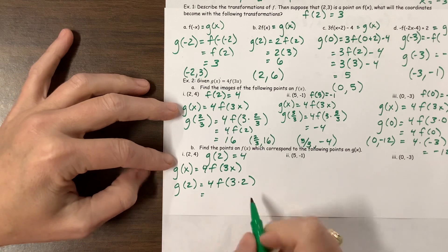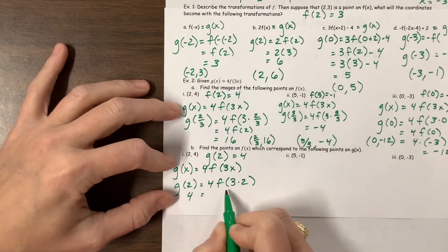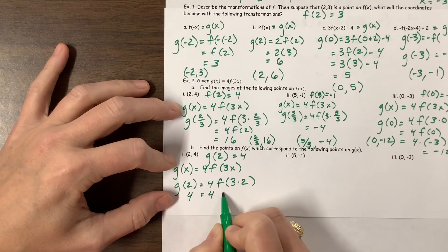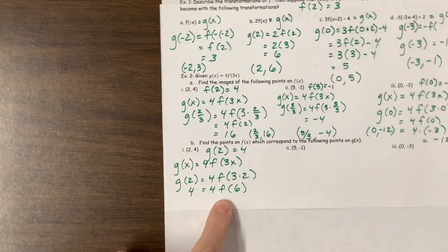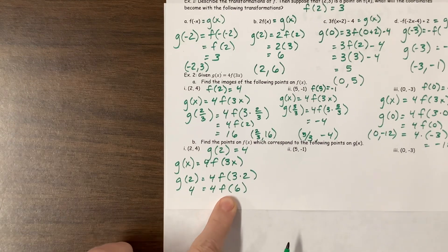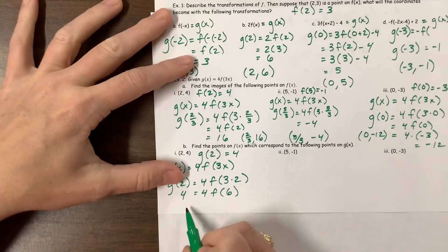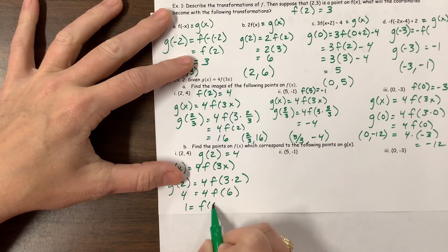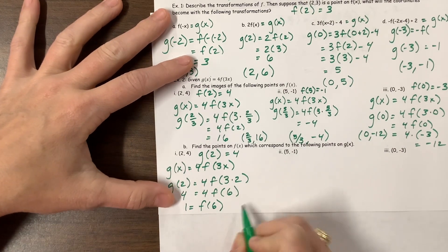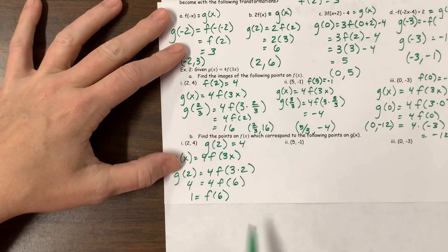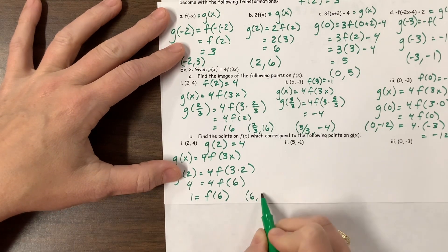Well, so g of 2 means I take g of 2 is equal to 4 times f of, well, 3 times 2. Okay, g of 2, we know to equal 4. This is 4 times f of 6. Well, so what we find here, we just want to solve for f of 6. So I can divide by 4, and I have that 1 is equal to f of 6. Or another way to say this is that when I have an x-coordinate of 6, my y-value is 1.